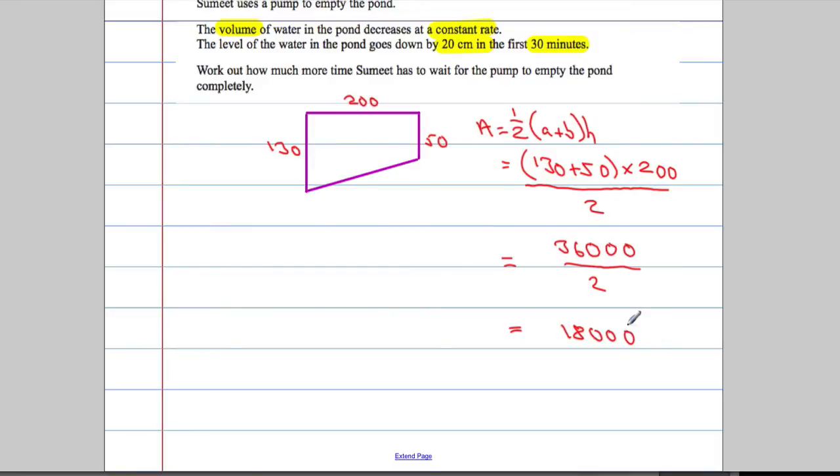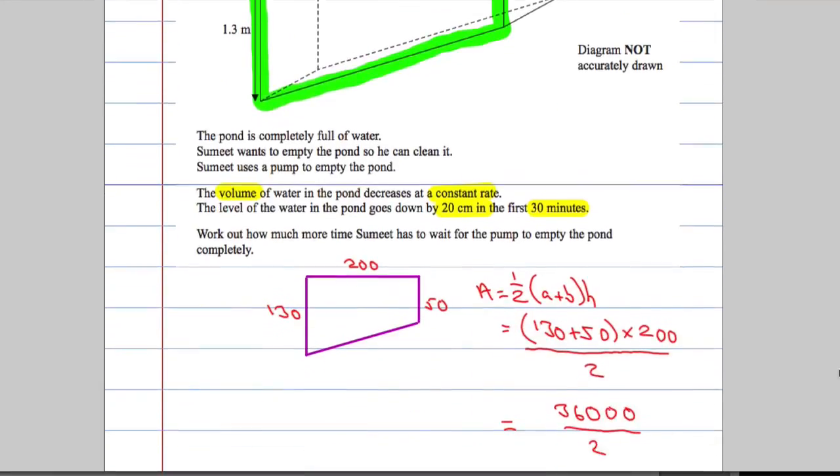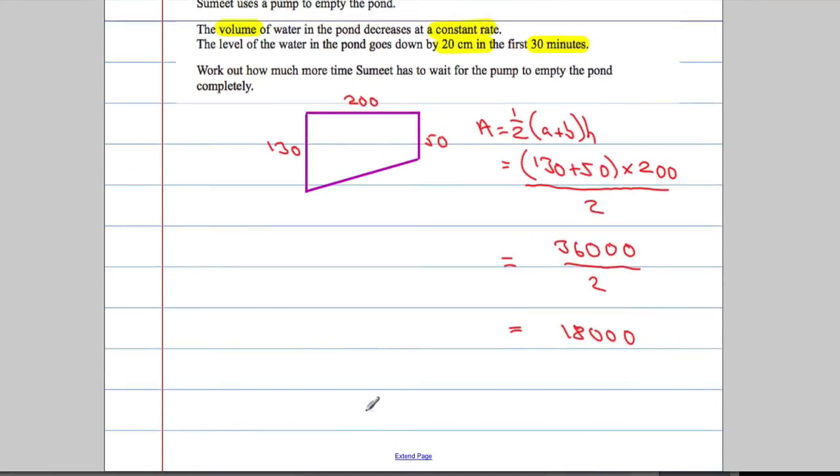That's 18,000 centimeters squared at the front, and how far back does it go? It goes one meter back which is 100 centimeters. So the volume is going to be 18,000 multiplied by 100, which is 1,800,000 cubic centimeters.